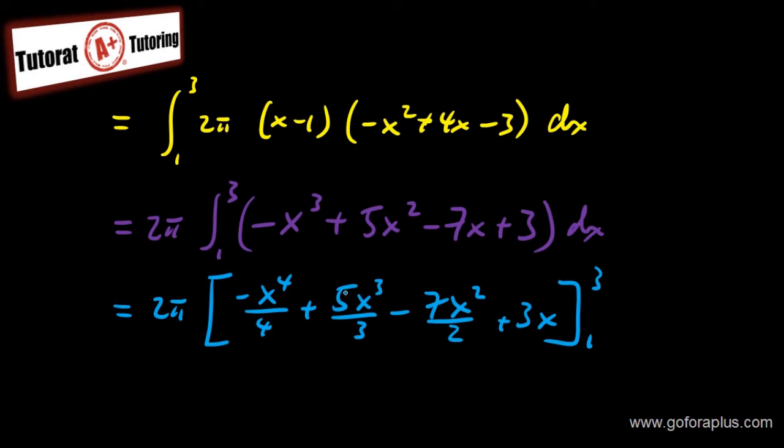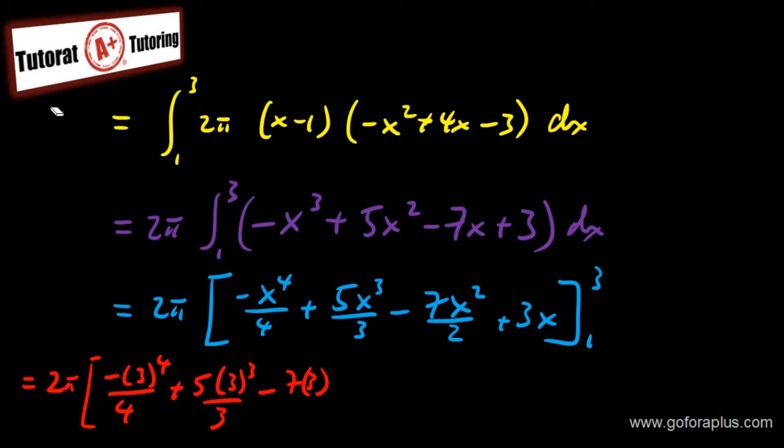Now, it's just plug in the numbers. So if you plug in the numbers, let me just make it more on the left side. I have 2 pi. So it will be minus 3 to the 4 over 4 plus 5 times 3 to the 3 over 3 minus 7 times 3 to the 2 over 2 plus 3 times 3. And all that subtract exactly the same thing replacing x by 1. So subtract becomes a plus 1 over 4, subtract 5 times 1, so I'll just leave it as 1 over 3. Subtract becomes a plus 7 over 2. And subtract 3 times 1, which is 1. So I'll close the bracket.